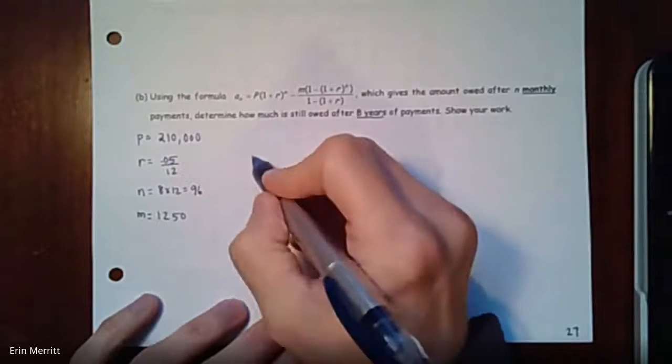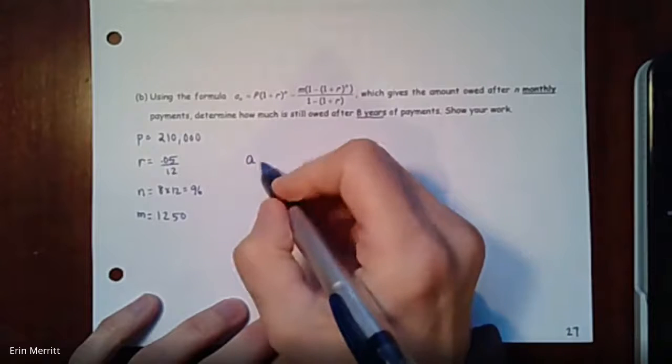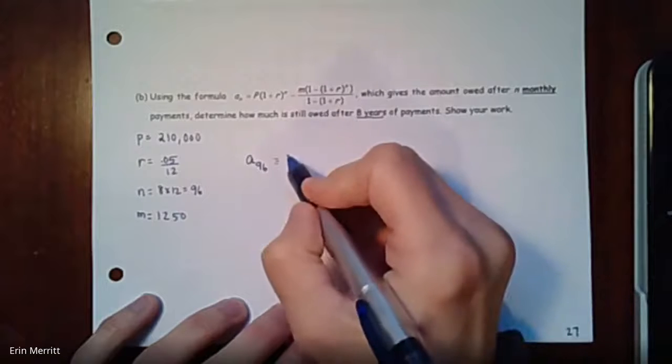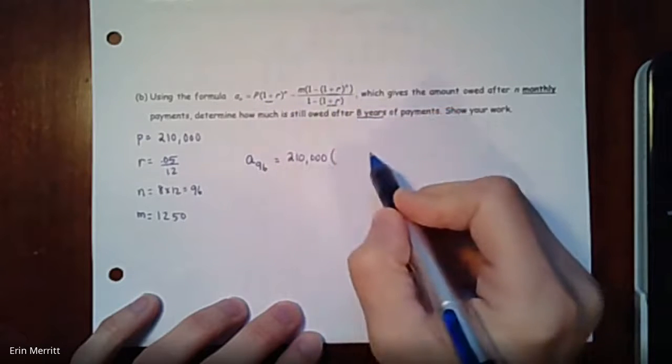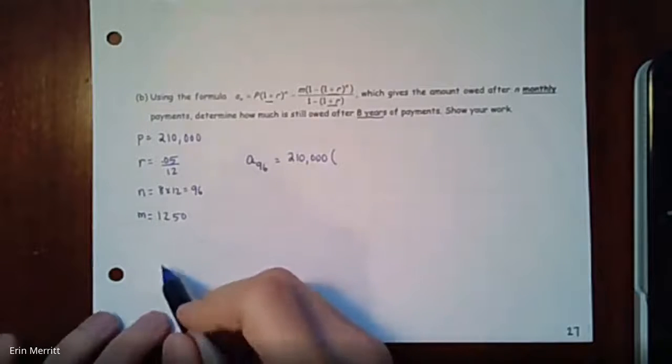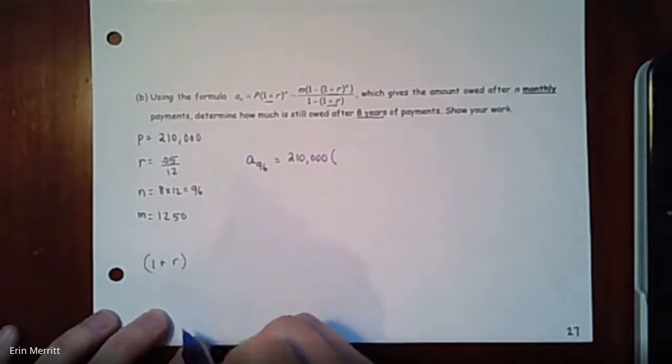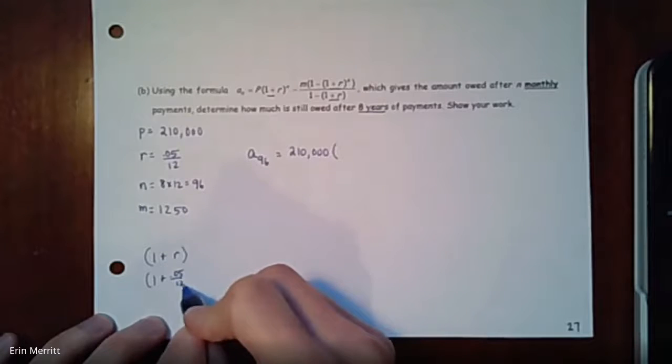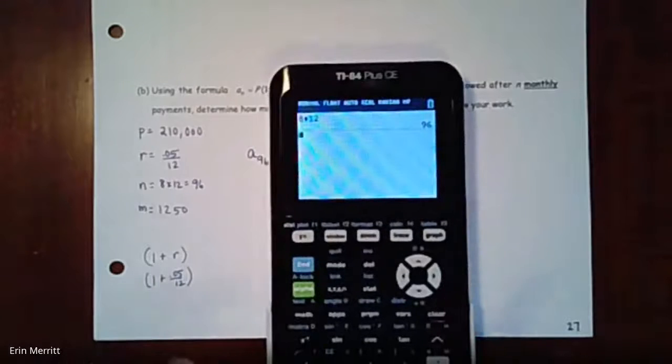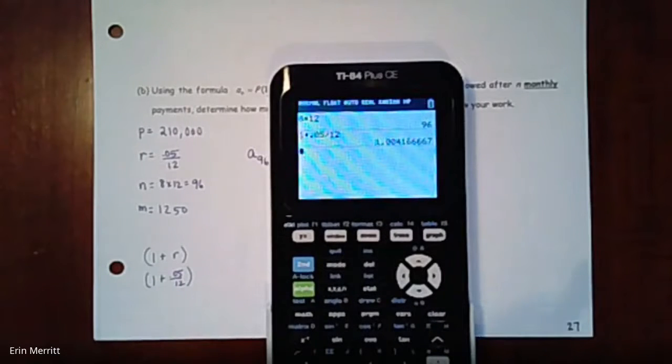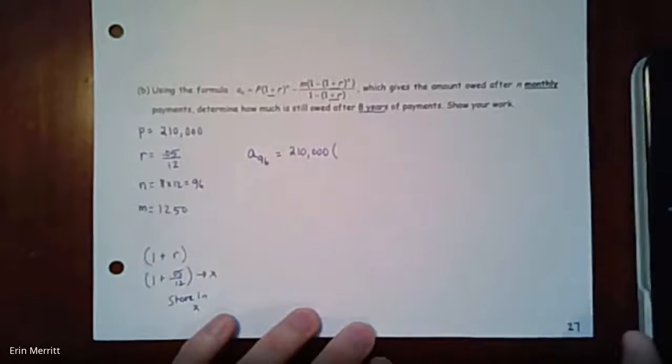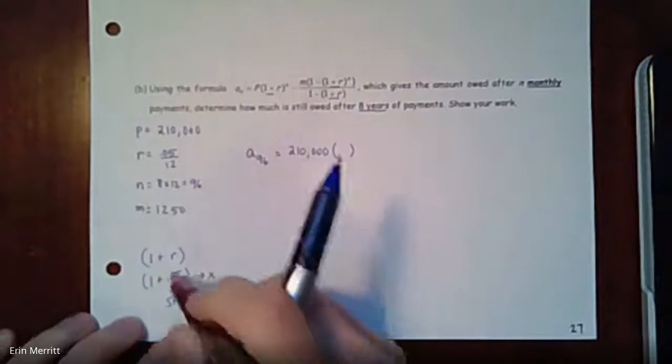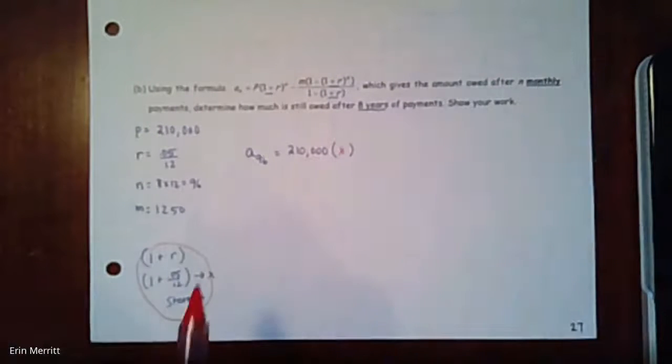Let's start plugging it in. To figure out how much you owe after eight years, that's really after 96 payments. So we're going to plug in 210,000 times - here's where we have that game of - we see that one plus r in multiple spots. Now you can write it out in there or maybe off to the side we can figure out what is going to be that one plus r value. So it's going to be 1 + 0.05 over 12.